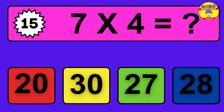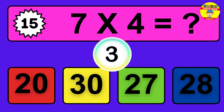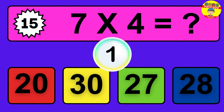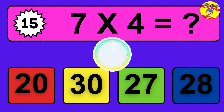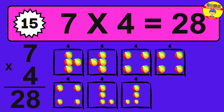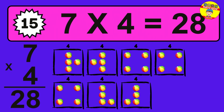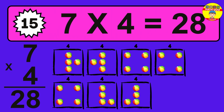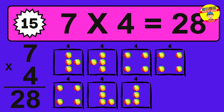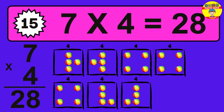Question 15. 7 times 4 equals what? The answer is 7 times 4 is 28. To calculate, we have 7 groups with 4 balls each one. So how many balls do we have? 28 balls.